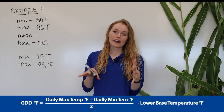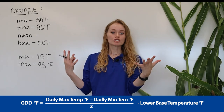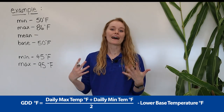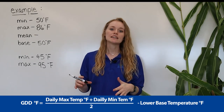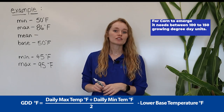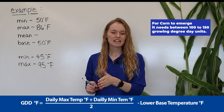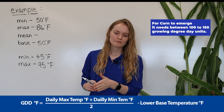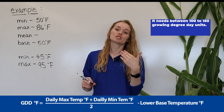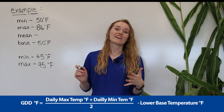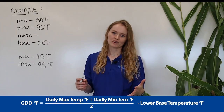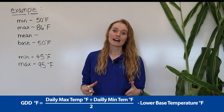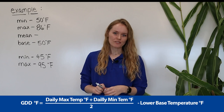For reference, for corn to emerge — to come up out of the ground — it needs 100 to 150 growing degree day units. For it to mature and be ready to harvest, we're looking at around 1,500 — so there are a lot of units to add together to reach maturity.